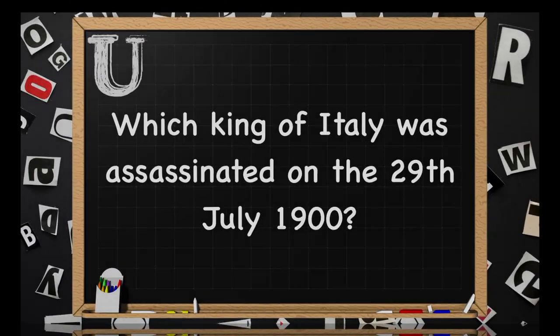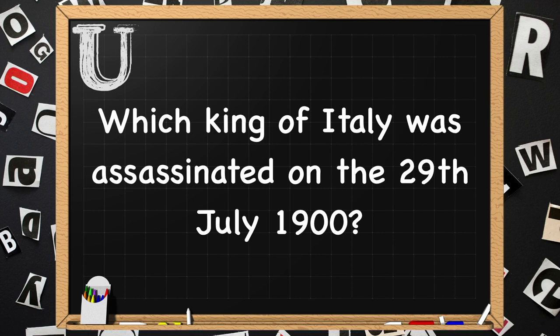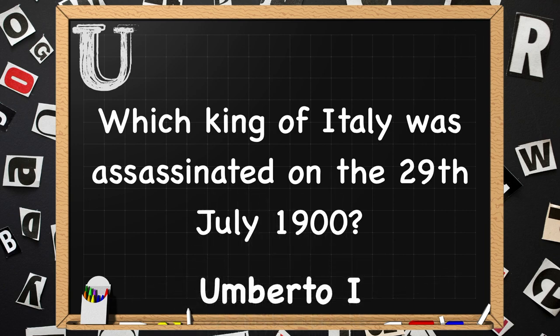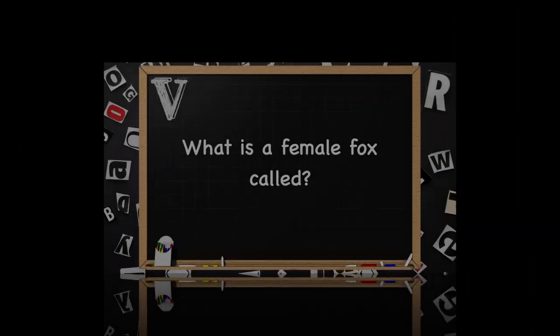Beginning with U. Which king of Italy was assassinated on the 29th of July 1900? That was Umberto I. If you just put Umberto, please give yourself the point — I'm not that mean.